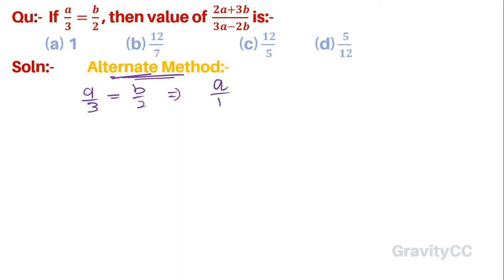So therefore, (2a + 3b)/(3a - 2b) equals...